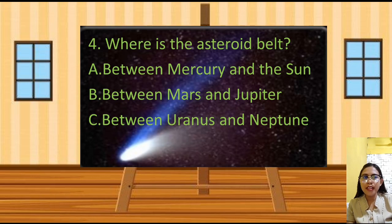Number 4. Where is the asteroid belt? Yes, the correct answer is letter B. It is found between Mars and Jupiter.